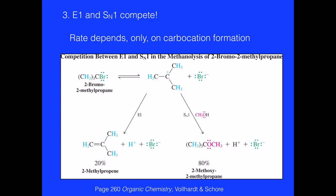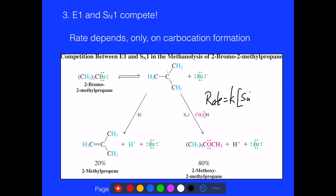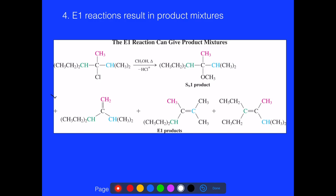SN1 reactions are much more prevalent. The rates for both E1 and SN1 depend on the substrate — the carbon-halogen bond — and that is a unimolecular process. The rate depends only on the substrate concentration, specifically how labile the C-X bond is and how easily it breaks.